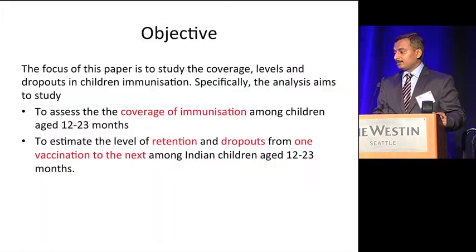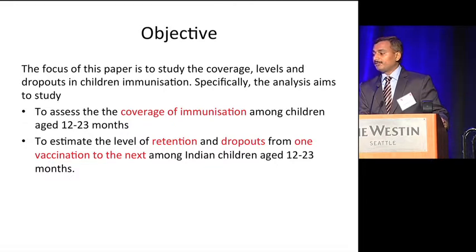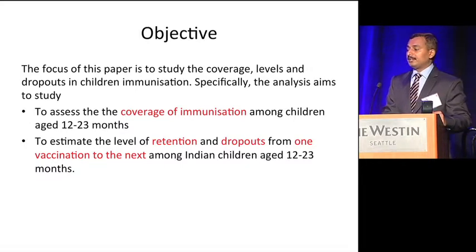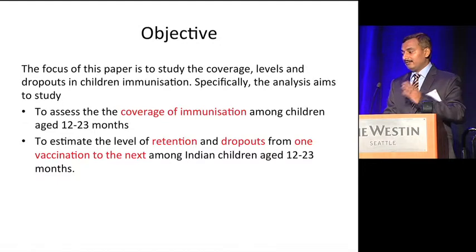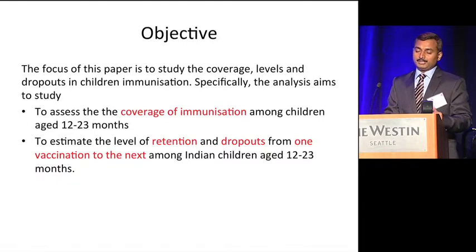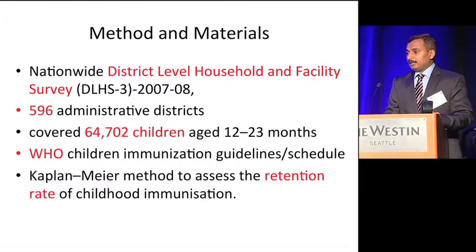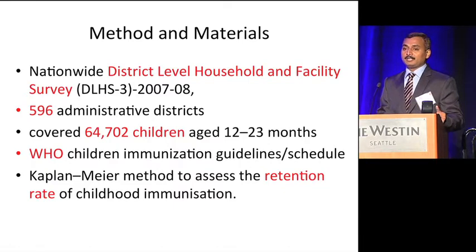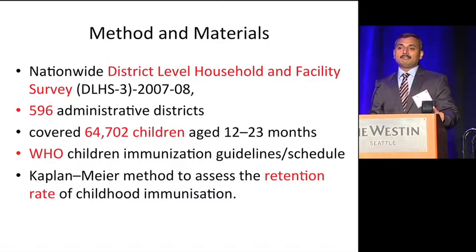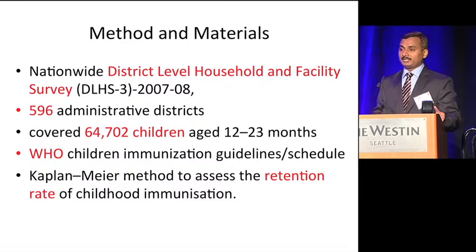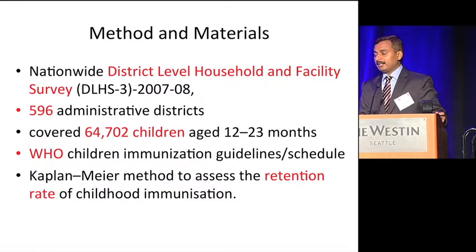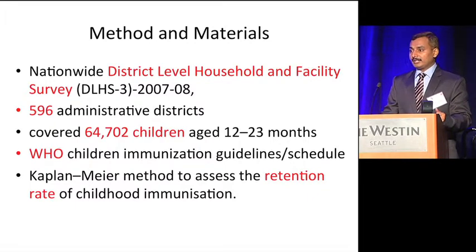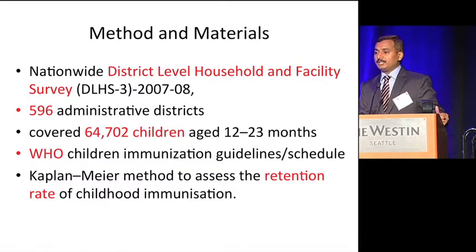There is a lack of empirical research on understanding childhood immunization by the standard WHO schedule. The specific objectives are to assess the coverage of immunization among children aged 12 to 23 months, and to estimate the levels of retention and dropout from one vaccination to the next among the same age group. This analysis utilizes the nationwide district-level household and facility survey conducted in 2007 and 2008, covering 596 administrative districts and approximately 64,000 children aged 12 to 23 months, adopting the WHO children's immunization schedule guideline.